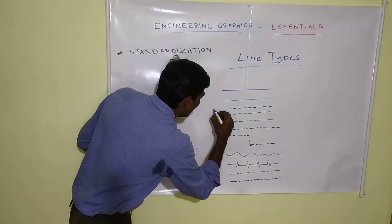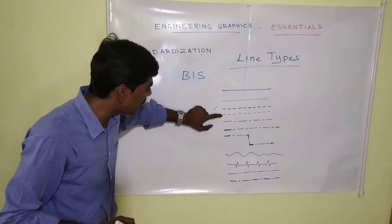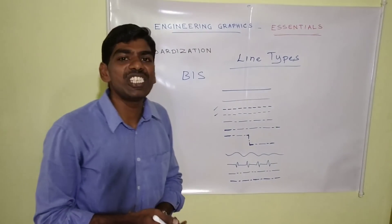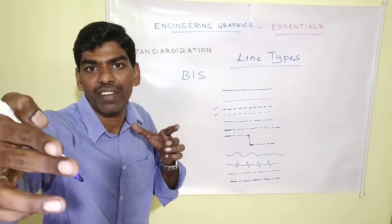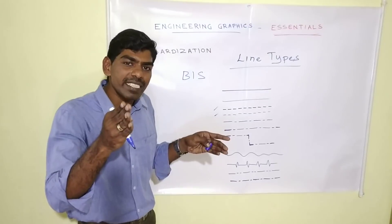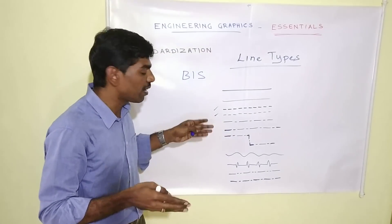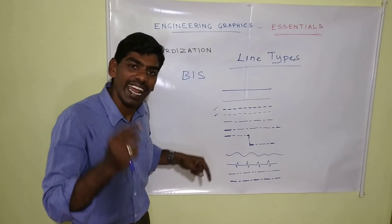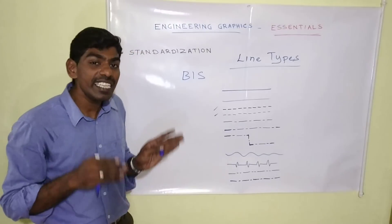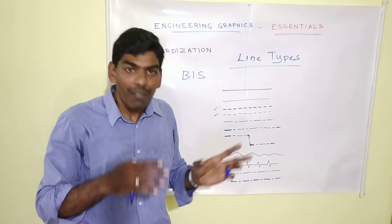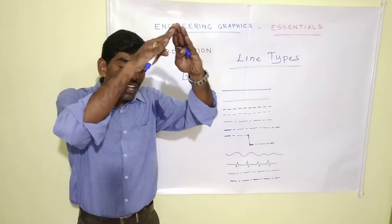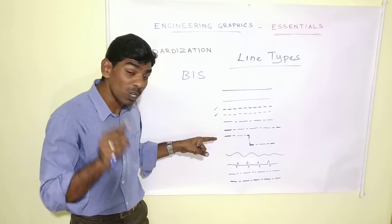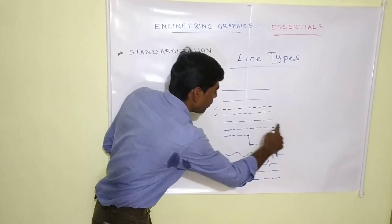For hidden lines, either the thick or thin dashed line can be used, but we must stick to one throughout the entire drawing. The chain line — long dash, space, short dash, space, long dash — is used to represent the axis of a solid, a line of symmetry, or a center line. The chain with darkened ends or bends is used to mention cutting planes. In later videos, we will cut a solid and look at its interior shape; in those cases, we represent the cutting plane with this line type.